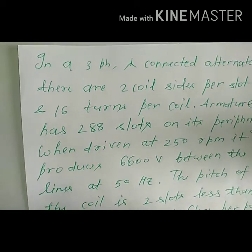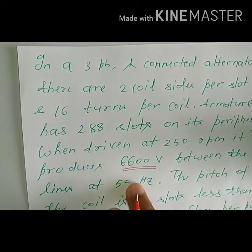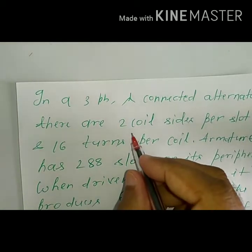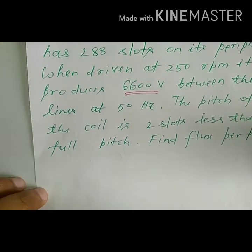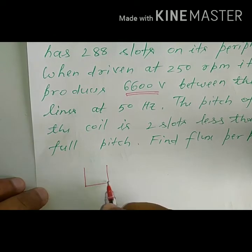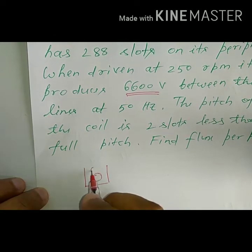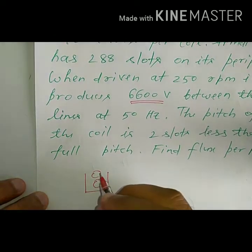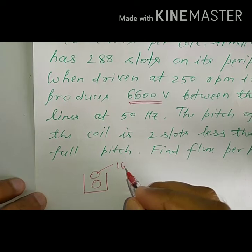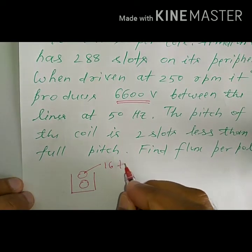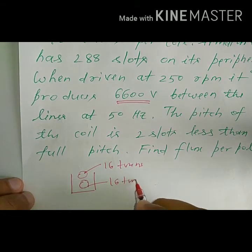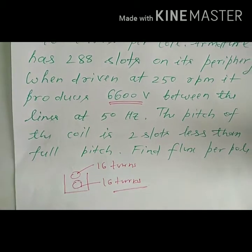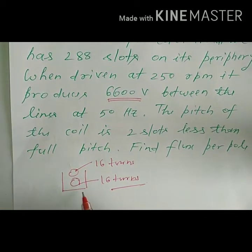EMF is given as line voltage. There are two coils per slot — that means two coils per slot, each coil having 16 turns. So in one slot there are 16 plus 16 turns worth of conductors.